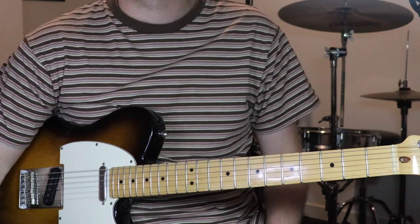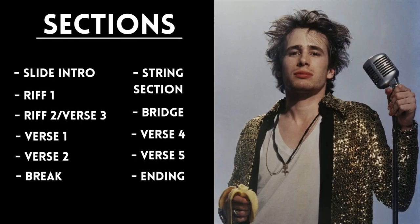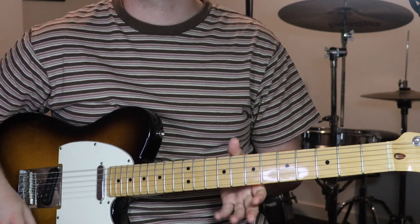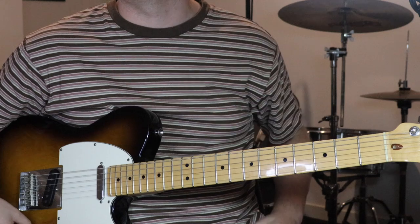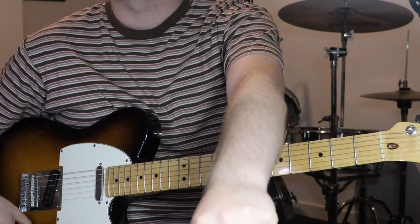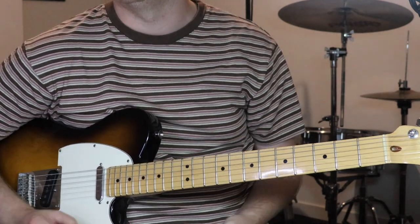I've got quite a few sections to this — I think it's 11 all up. We've got the slide intro, then riff one, then riff two slash verse three (they're the same thing), then verse one, verse two, a short break, the string section that happens in the middle of the song, a bridge, verse four, verse five, and then the ending. I'll go through section by section, give you an example of each part, and then teach it to you. You'll also need a slide just for the opening section.